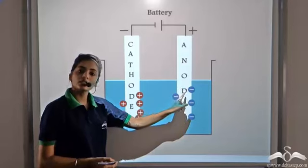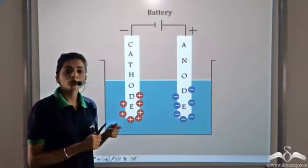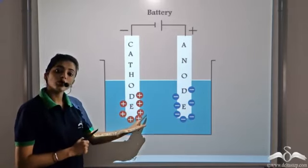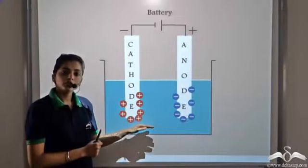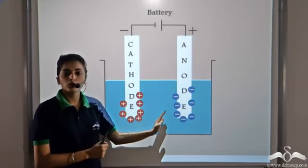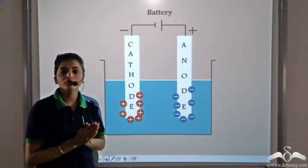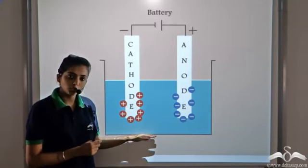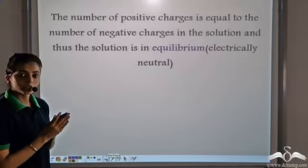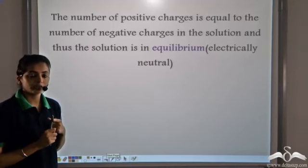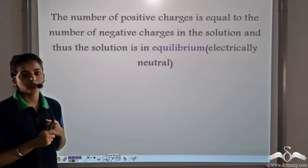The anions migrate towards the anode. At any time during the electrolysis process, the total number of positive charges is always equal to the total number of negative charges in the solution. Whenever the total positive charges equal the total negative charges, the solution is always in equilibrium — meaning it is always electrically neutral.